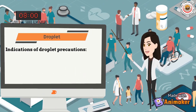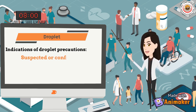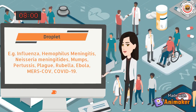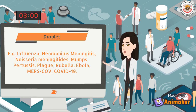Indications of droplet precautions include care of suspected or confirmed patients with droplet-transmitted disease. For example: influenza, Haemophilus meningitis, Neisseria meningitidis, mumps, pertussis, plague, rubella, Ebola, MERS-CoV, and COVID-19.